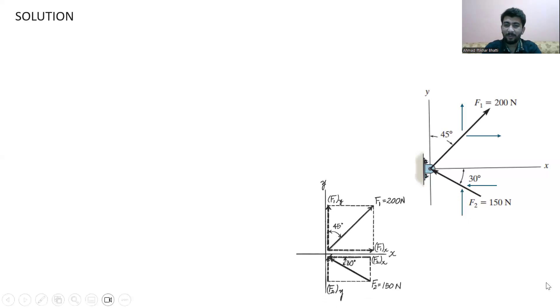In the free body diagram, you observe that the 45 degree angle is making with the y-axis. So in case of the force in the x-direction, we use the sine component, and in case of the forces in the y-direction, we use the cosine component.